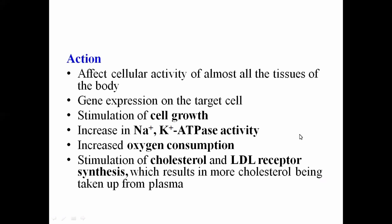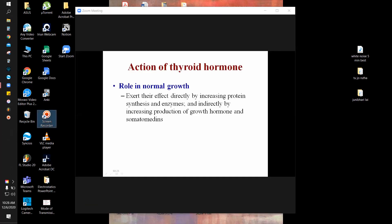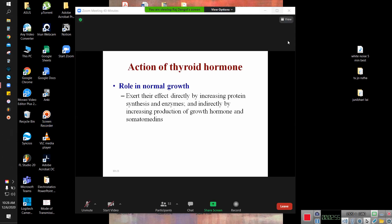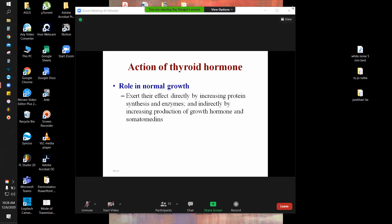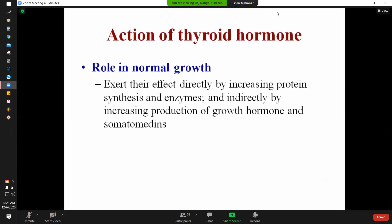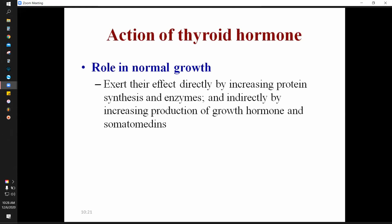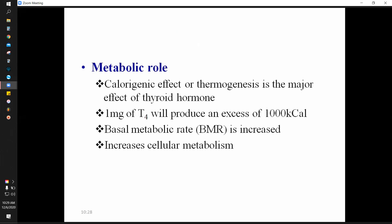Regarding the role of thyroid hormones in normal growth, they exert their effects directly by increasing protein synthesis and enzymes, and indirectly by increasing the production of growth hormones and somatomedins. These growth hormones and somatomedins are involved in the growth of the person.